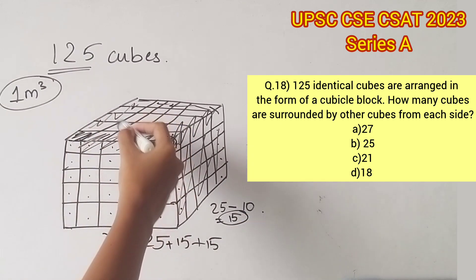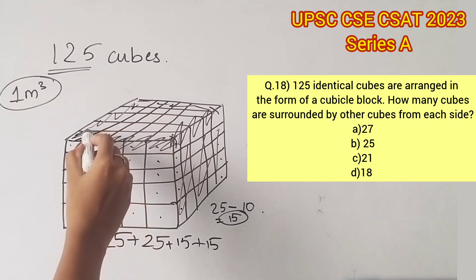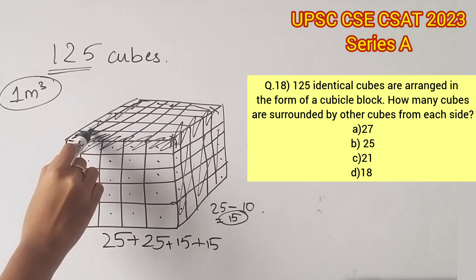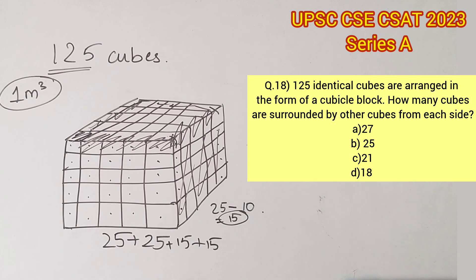Let's calculate for the remaining portion, the top portion. All the edges of the top portion have already been calculated with fronts and sides. Therefore we'll have to eliminate all the edges from the top and bottom portions. We have a total of 16 edge cubes, therefore 25 minus 16 will give us 9.